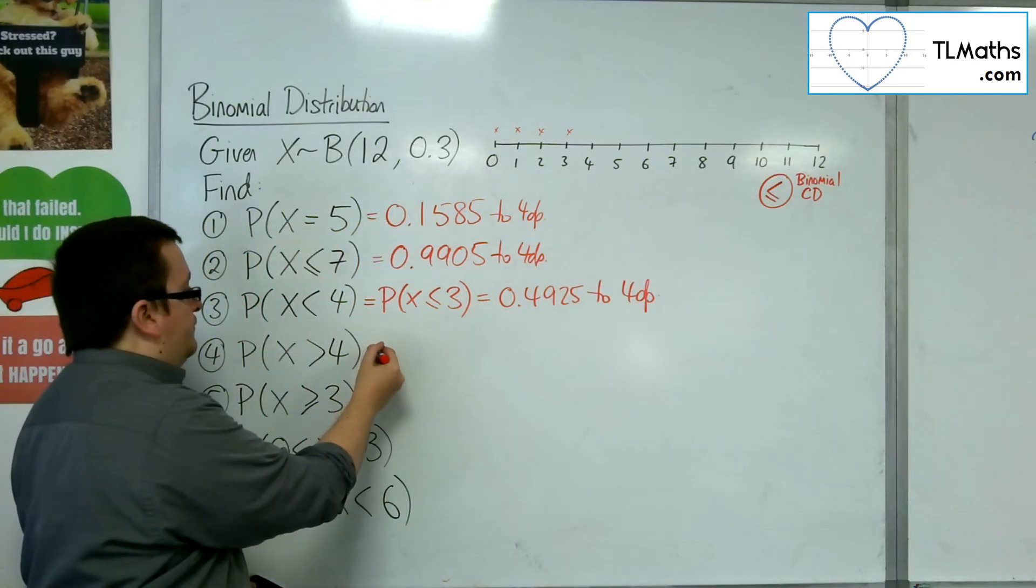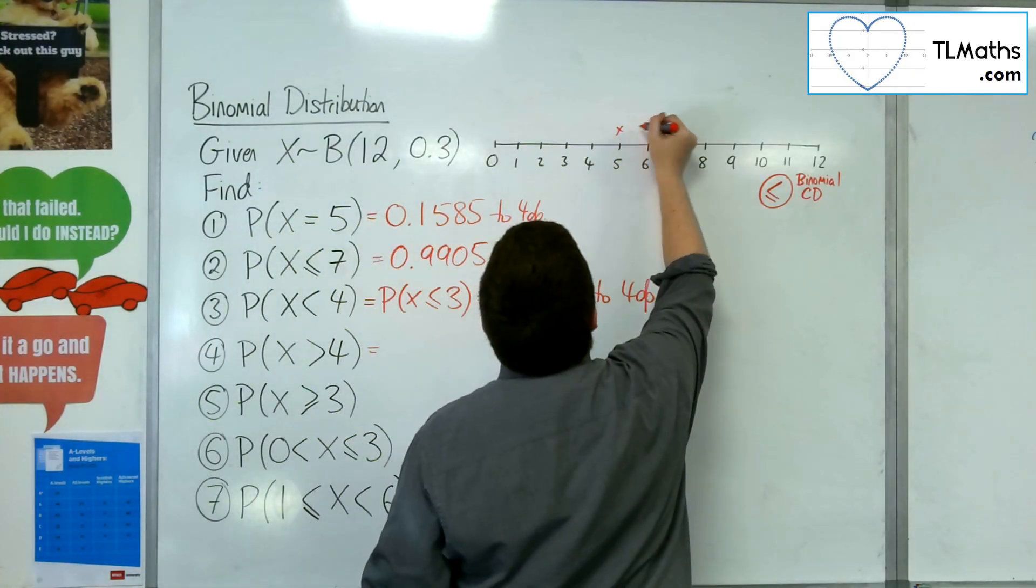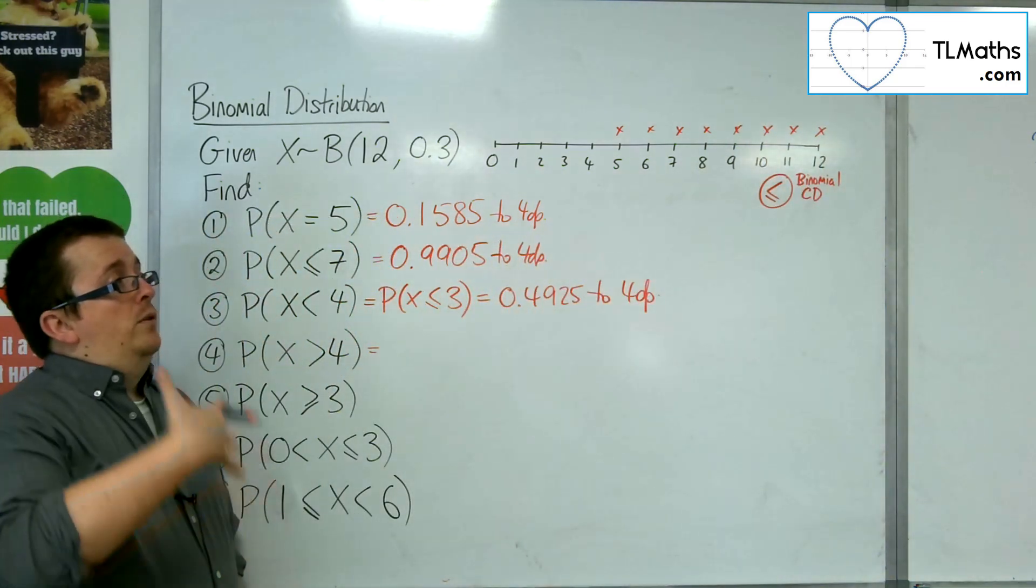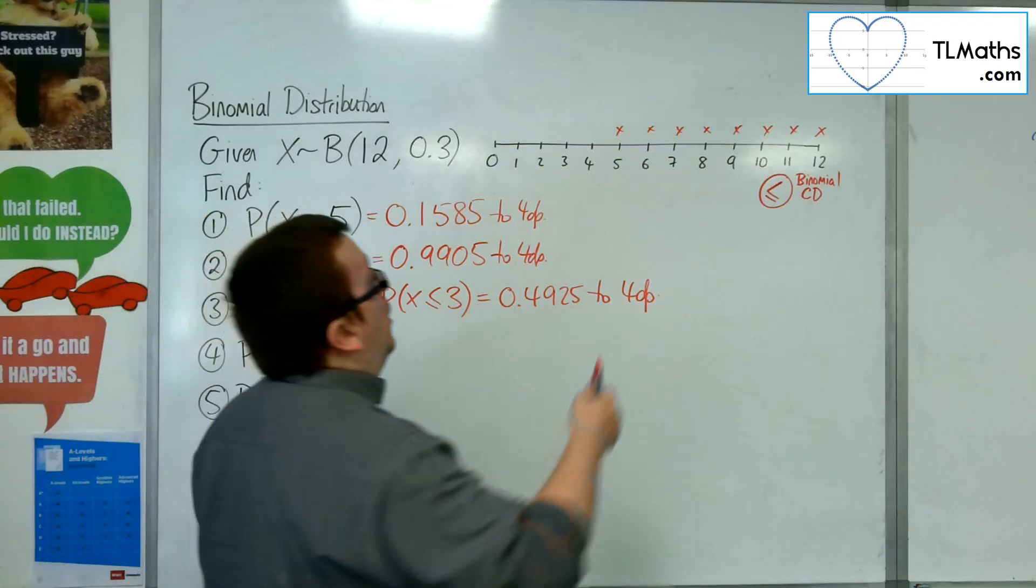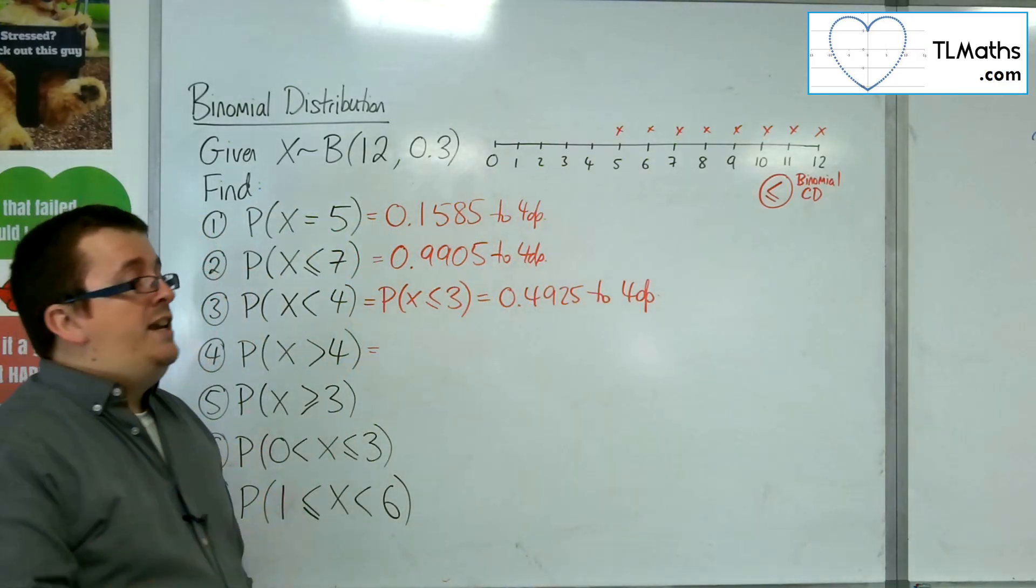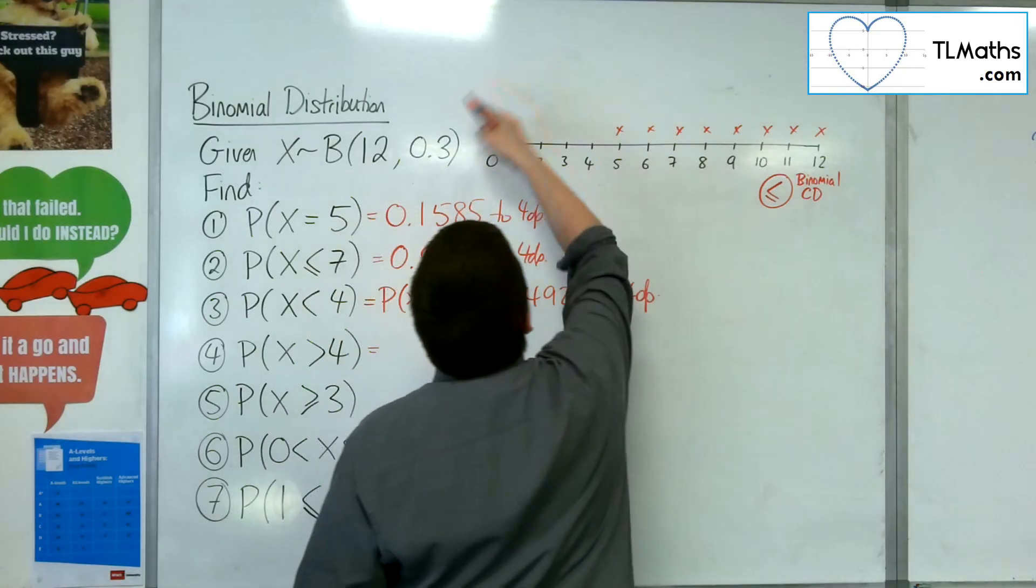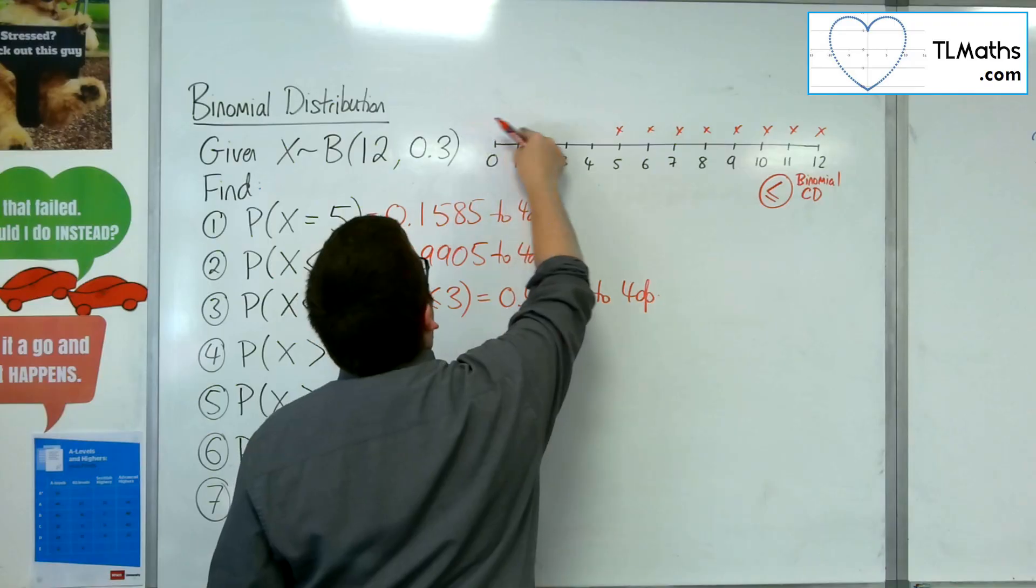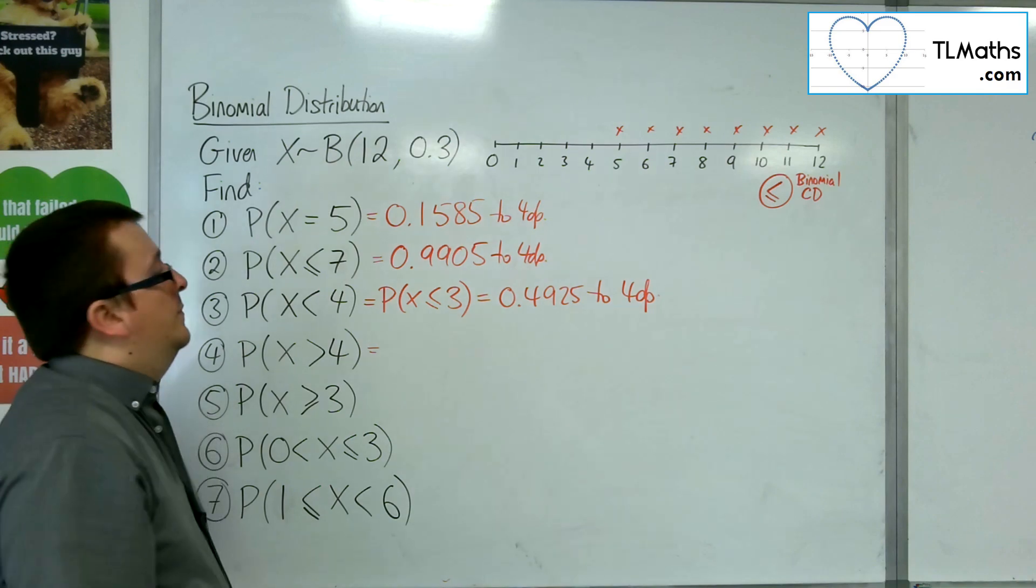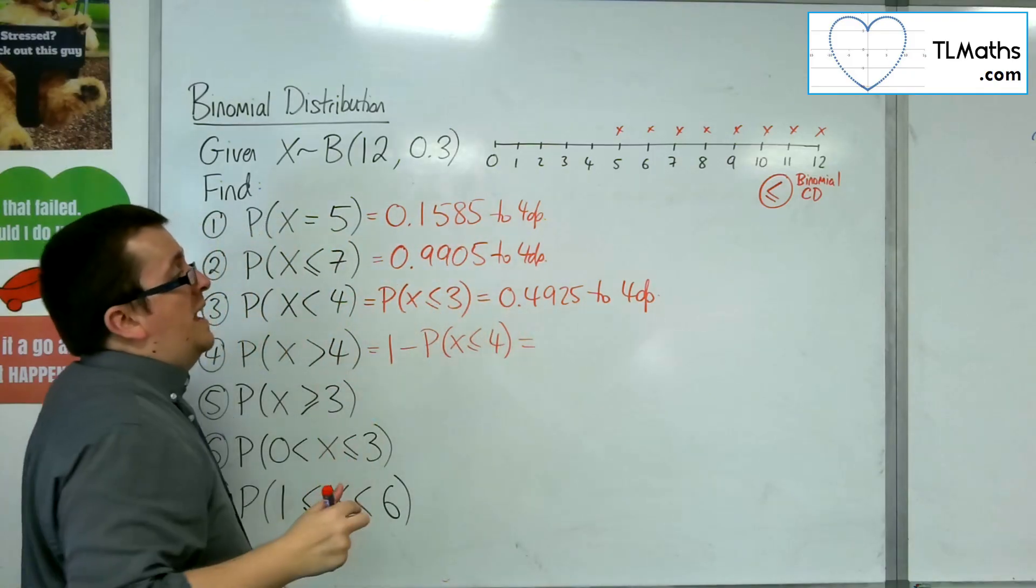For greater than 4, let's scrub those out. Greater than 4 would be 5, 6, 7, 8, 9, 10, 11 and 12. Now, thinking back to your discrete probability distributions, all of the probabilities, the whole lot, must add up to 1. So, I can use my calculator to find a less than or equal to. So, if I do 1 and then take away the bit I don't want, less than or equal to 4, I'll be left with all the probabilities that I want. So, I can do 1, take away less than or equal to 4, in order to get my answer.